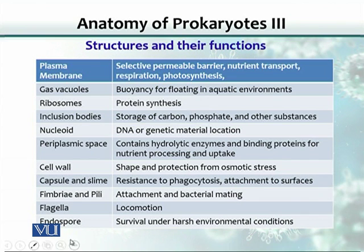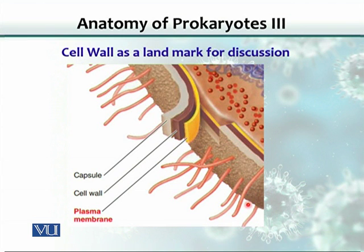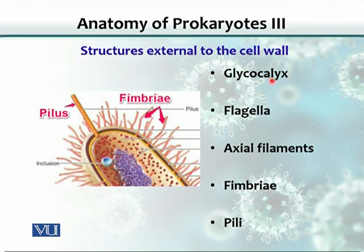The endospore is a special structure formed under environmental conditions that are not very friendly for bacterial growth. It is a survival strategy used by some bacteria — not all of them are able to make endospores. Taking the cell wall as our landmark, there are structures external to it, including the capsule and fimbriae — hair-like projections.